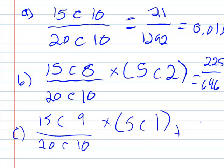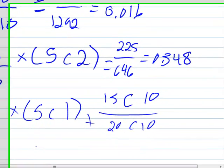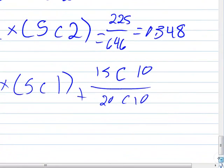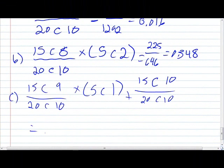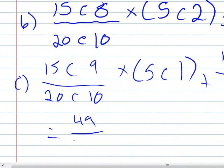And then you have to add that because it's at least 9. So you have to take the possibility that you don't have 9 and that you have 10. So you take the 15 and you choose 10 in case you need them all. And you have 20 choose 10. And that would all equal 49 over 223 or 0.152.